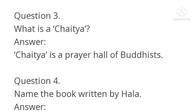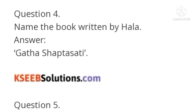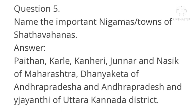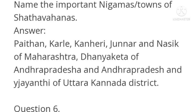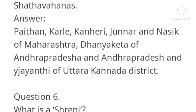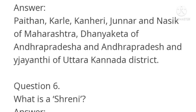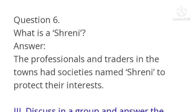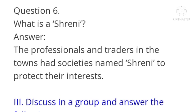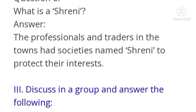Question 3: What is a Chaitya? Answer: Chaitya is a prayer hall of Buddhists. Question 4: Name the book written by Hala. Answer: Gatha Saptasati. Question 5: Name the important Nigamas or towns of Shatavahanas. Answer: Paithan, Karle, Kanheri, Junnar, and Nasik of Maharashtra; Dhanyakata of Andhra Pradesh; and Viajanti of Uttara Kannada district. Question 6: What is a Shrini? Answer: The professionals and traders in the towns formed societies named Shrini to protect their interests.